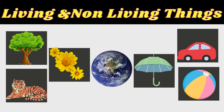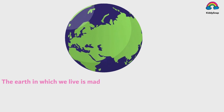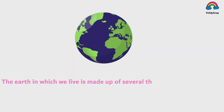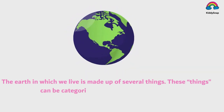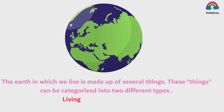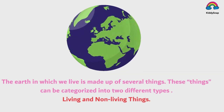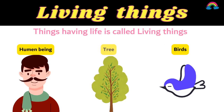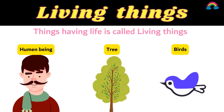The earth in which we live is made up of several things. These things can be categorized into two different types: living things and non-living things. Things having life are called living things.